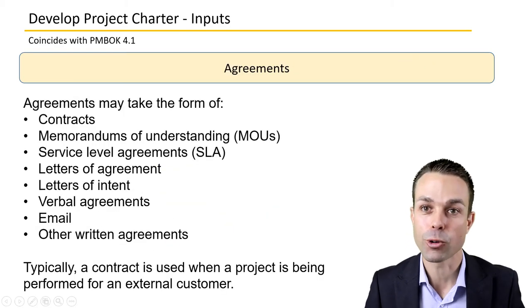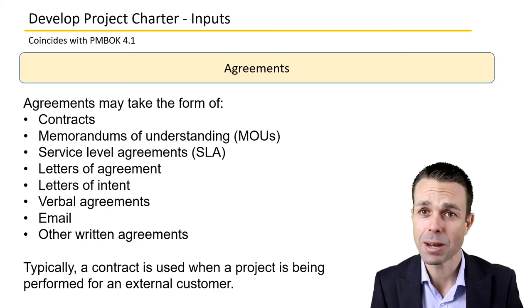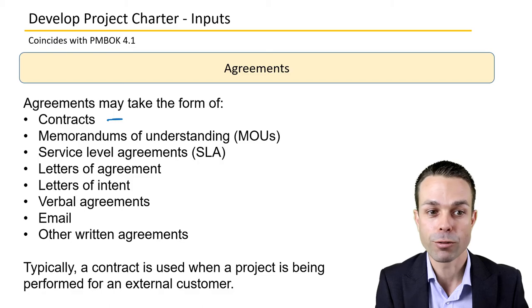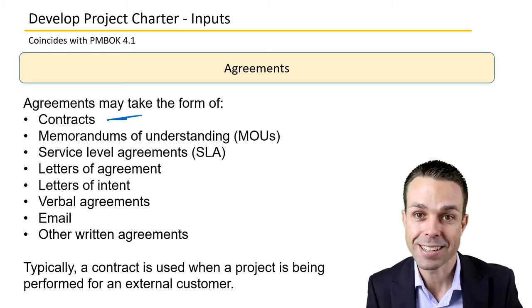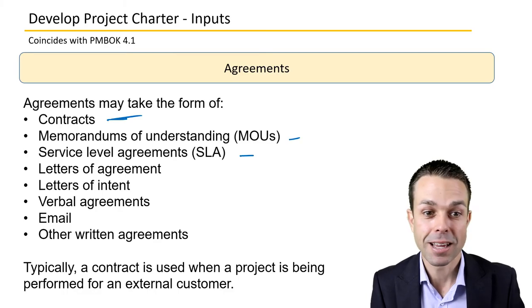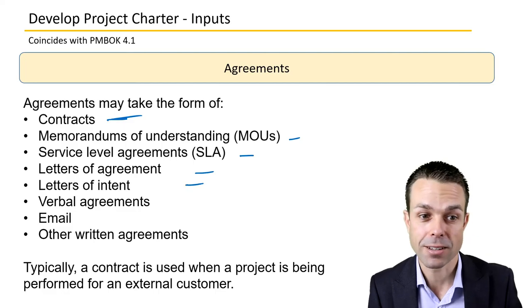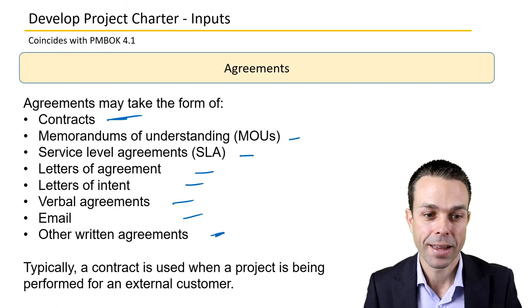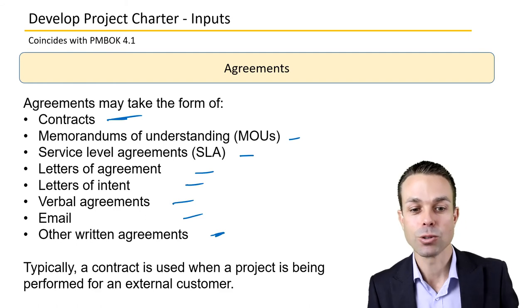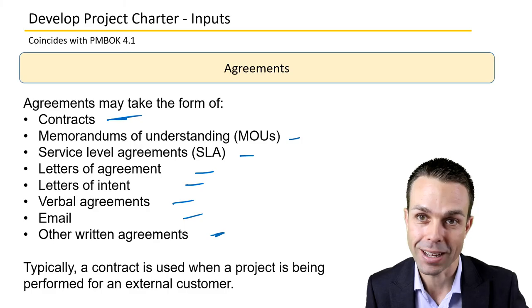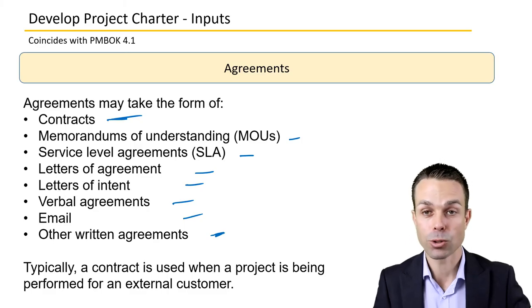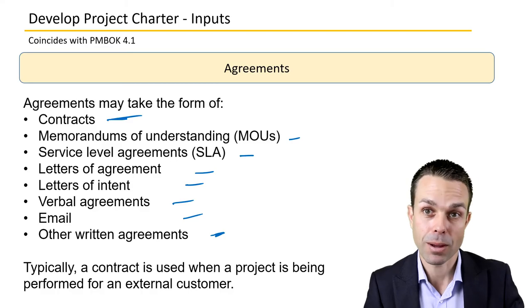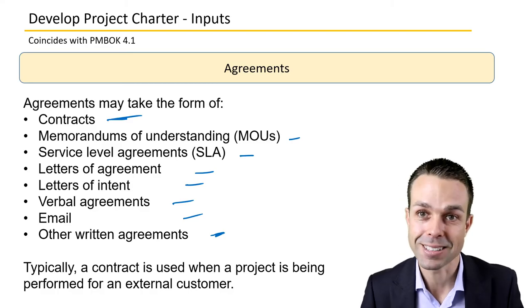We're also looking at agreements as an input into our project charter, because someone has to agree to make this project happen. It might take the form of contracts, memorandums of understanding or MOUs, service level agreements, letters of agreement, letters of intent, verbal agreements, emails, or other written agreements. Typically, a contract is used when a project is being performed for an external customer or when the two parties are separate organizations.